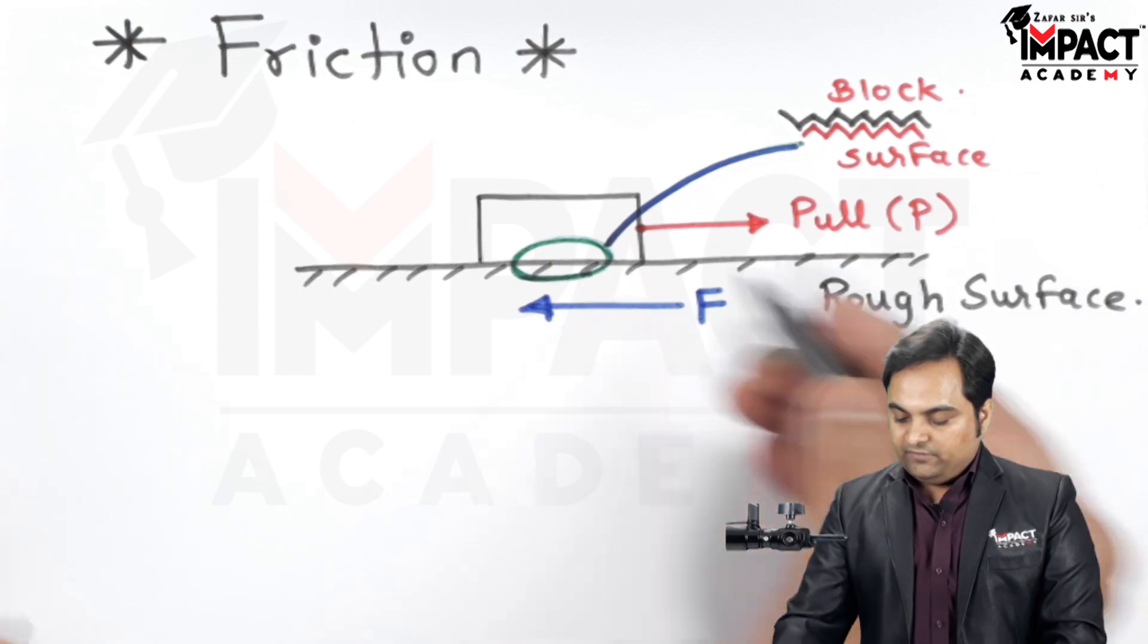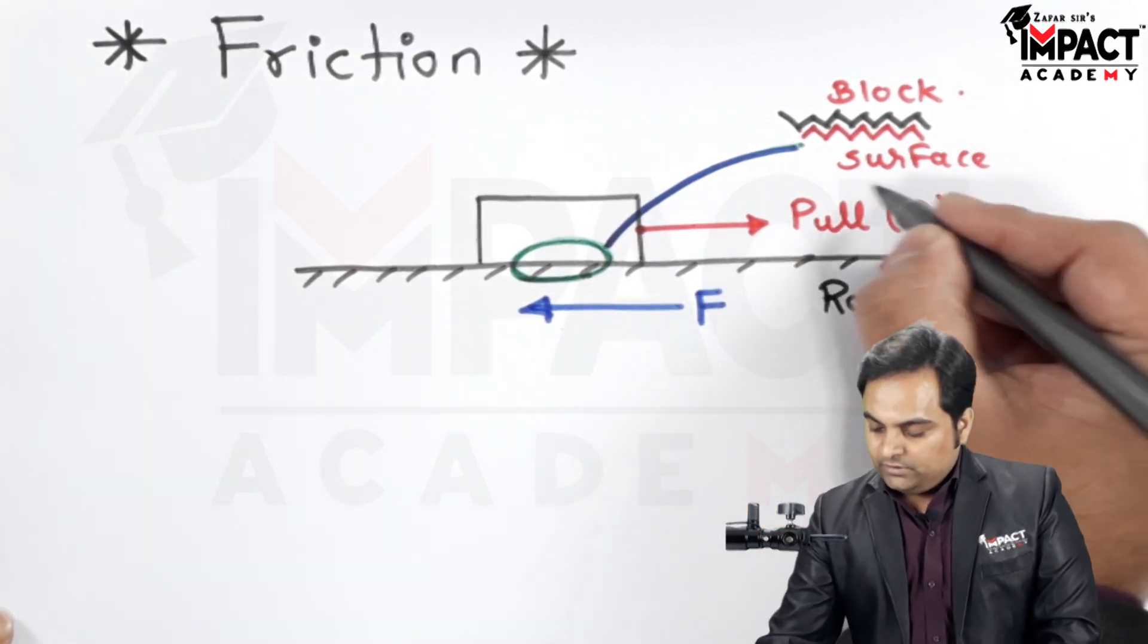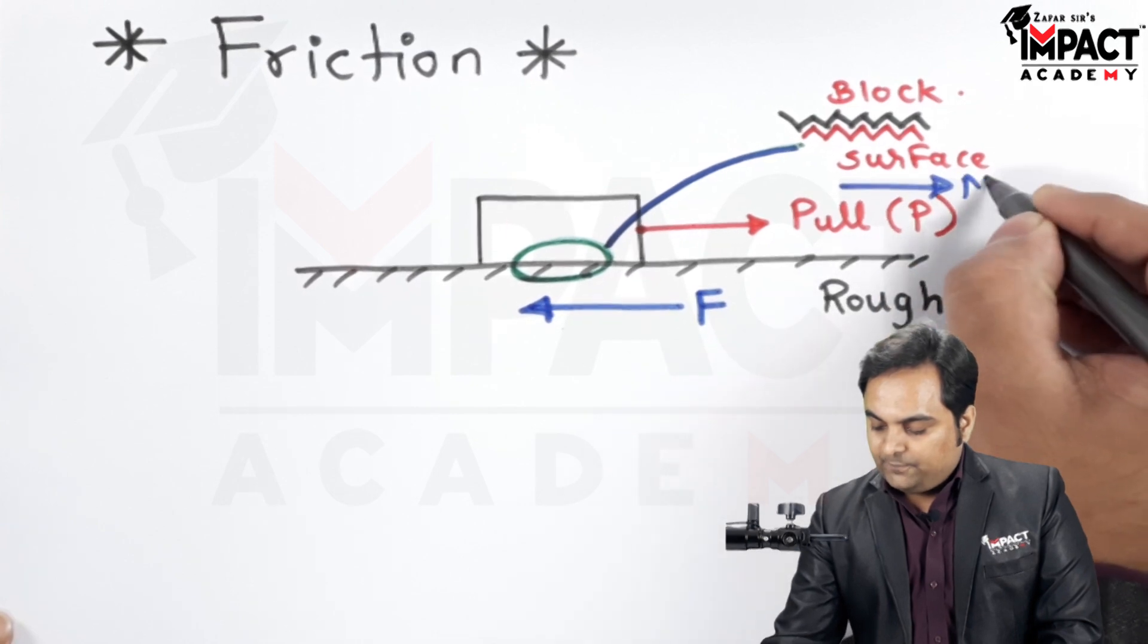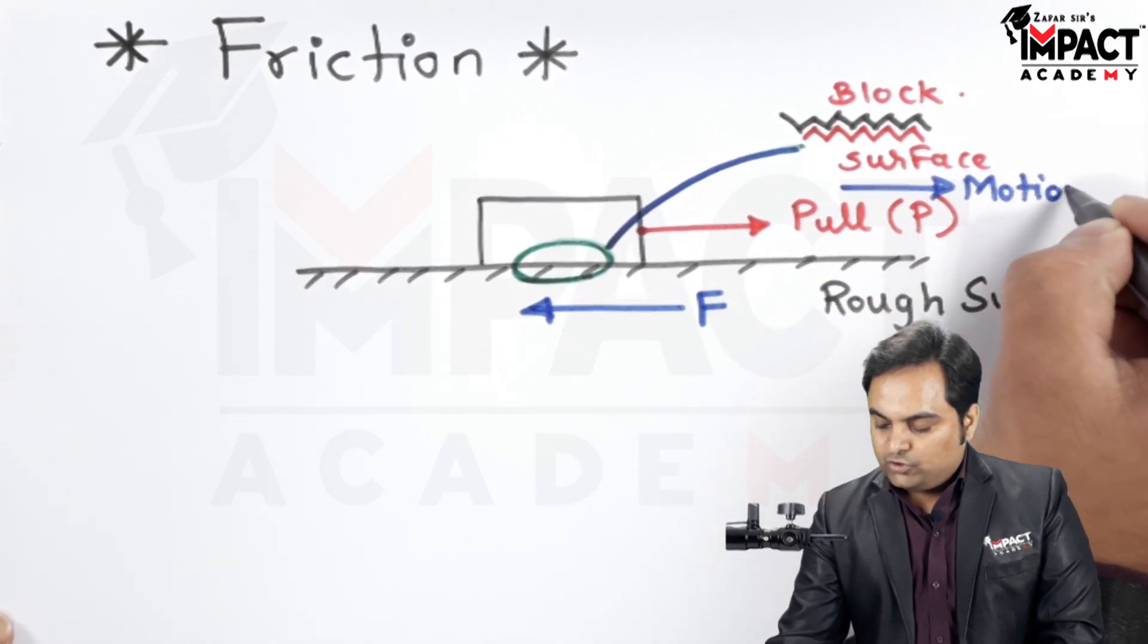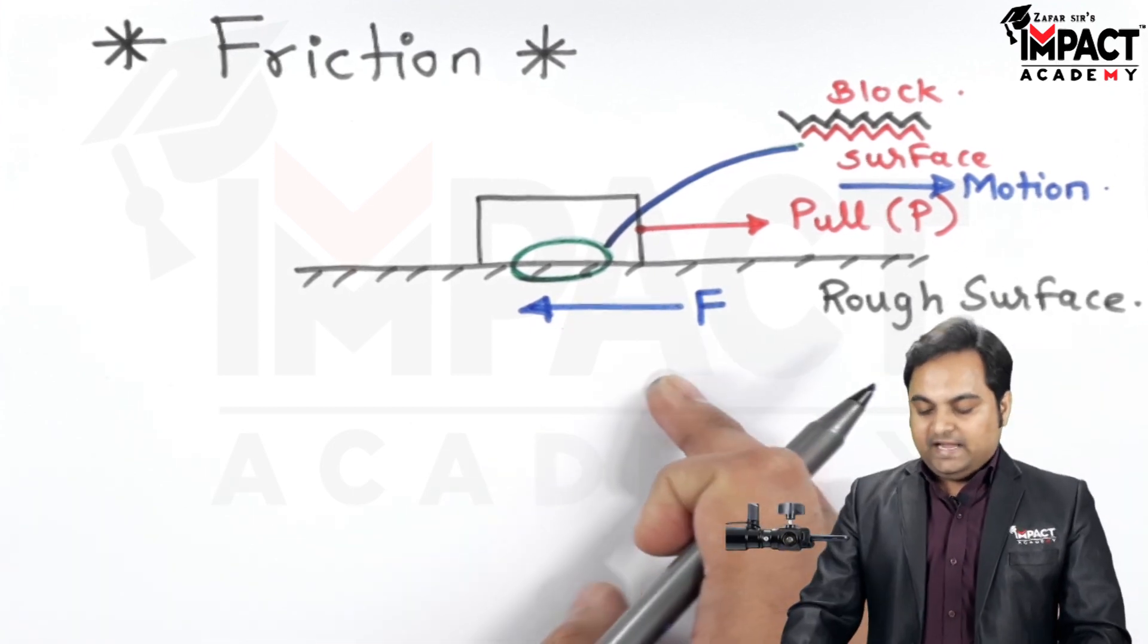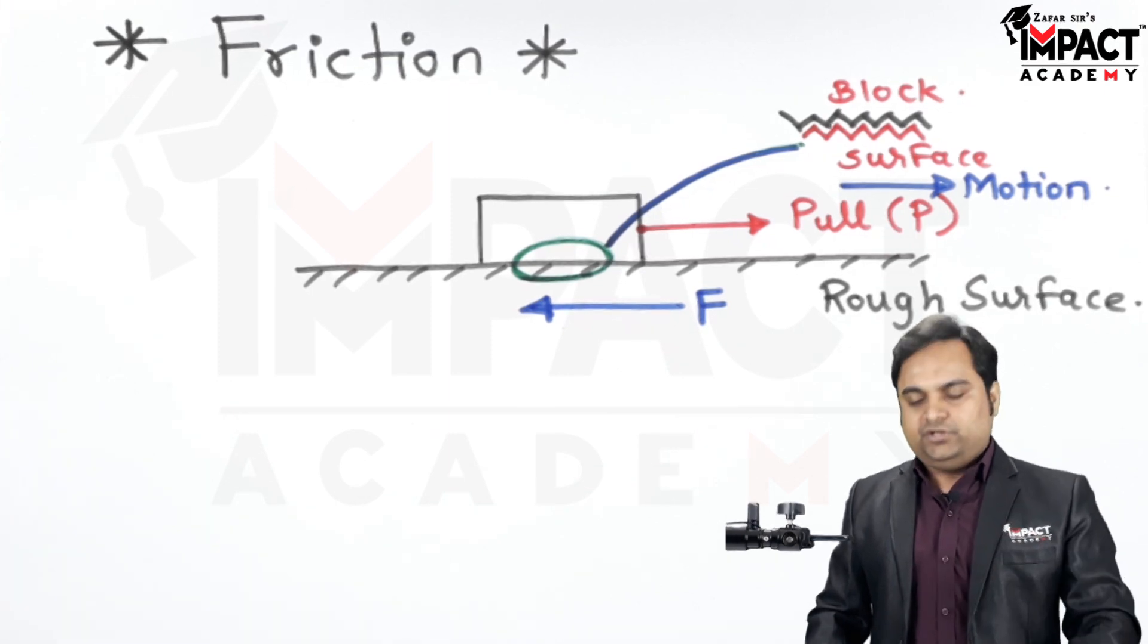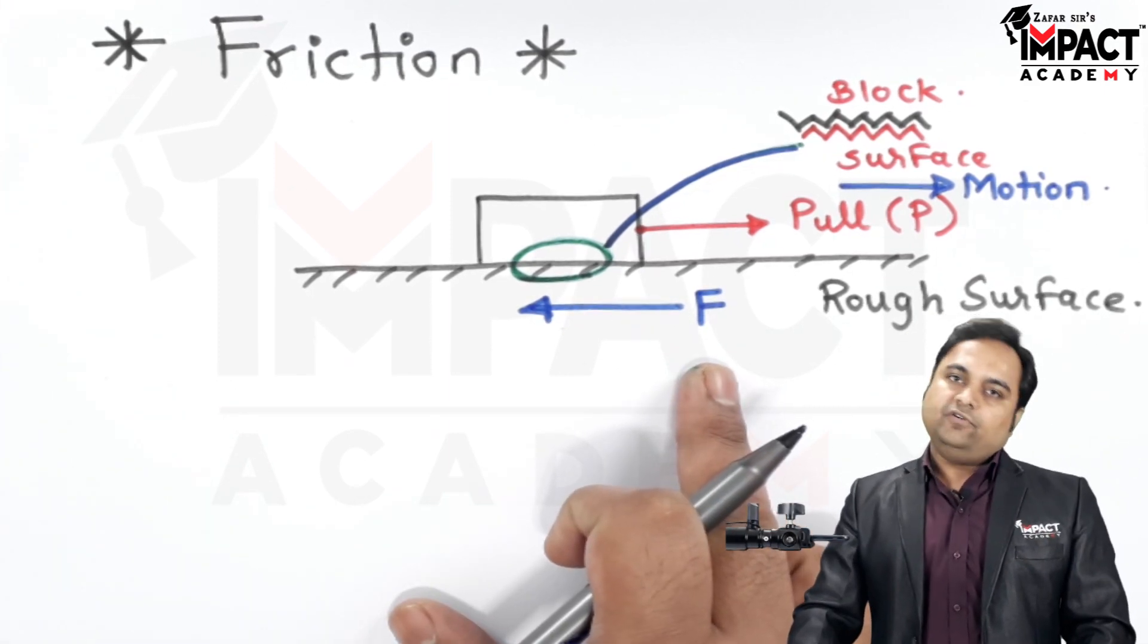Also called as the frictional resistance or force of friction. It means whenever we are trying to move any object, then as per our direction of motion, we are going to encounter an opposite force to motion and that opposition or resistance to motion is called as the force of friction.